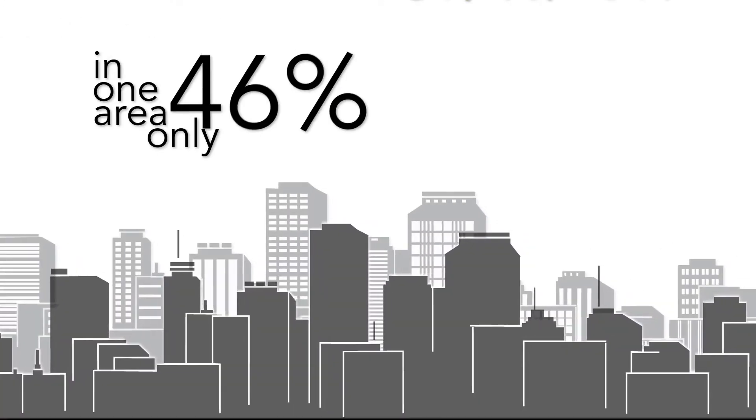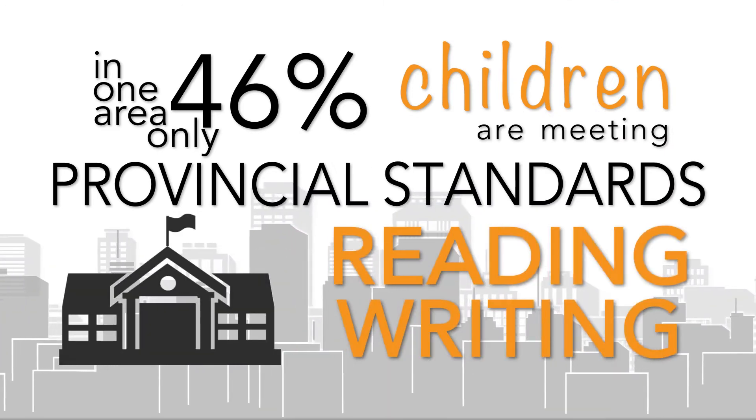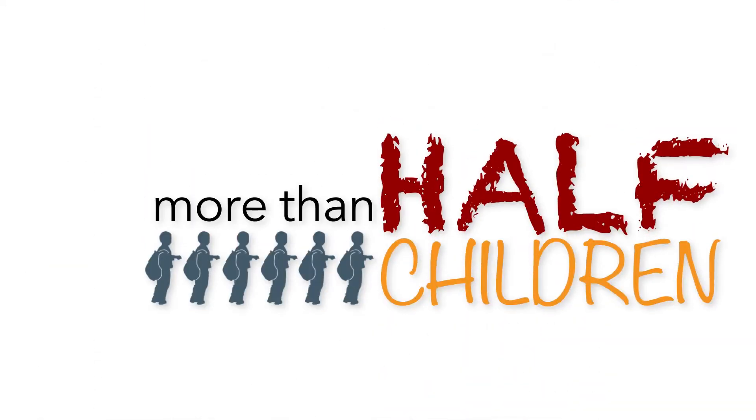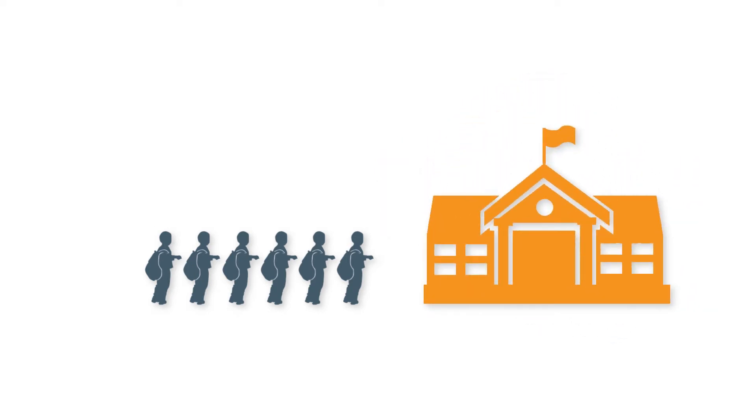In one area, only 46% of children are meeting provincial standards for reading and writing. That means that more than half of children, by no fault of their own, lack the literacy skills they need to succeed in elementary school.